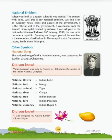Other national symbols: The national song of India, Vande Mataram, was composed by Bankim Chandra Chattopadhyay. Vande Mataram was sung by Tagore in 1896 during the session of the Indian National Congress. Other national symbols include: National Flower — Indian Lotus; National Fruit — Mango; National Animal — Tiger; National River — River Ganga; National Tree — Indian Banyan; National Bird — Indian Peacock; National Currency — Indian Rupee.